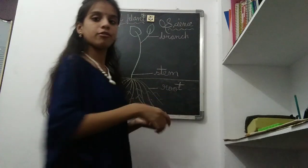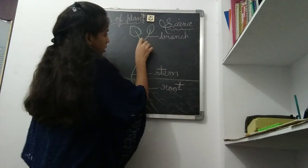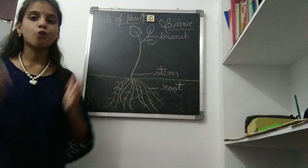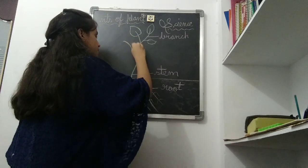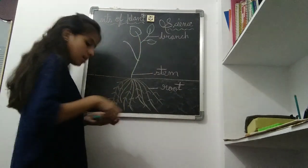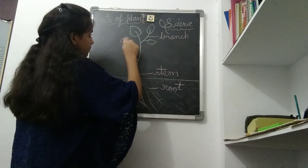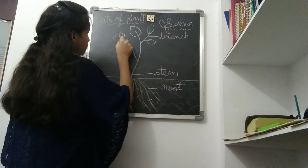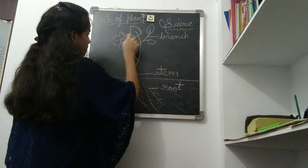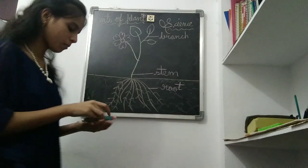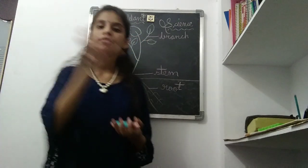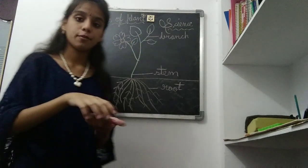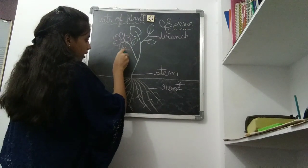Branch is the singular form. Branch. Next let us draw a flower. This is a flower. Let us continue by adding a leaf and bud. You know what is a bud? Before the flower comes, it is in the form of a bud. And we have a pink color bud.